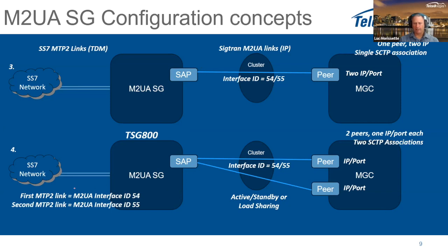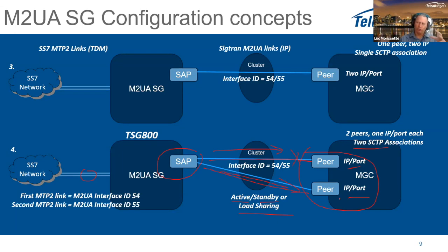The fourth mode also has two MTP2 links but at the remote end there are two different IPs and ports in two separate peers, making them totally independent. They still belong to the same cluster but create two separate SCTP associations. Both associations will be up in either active-standby mode or load sharing mode. With active-standby, both interface IDs send on the same SCTP association unless it goes down. With load sharing, traffic can be sent on both. On the remote side, both IPs and associations come back to the same M2UA stack.